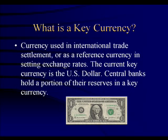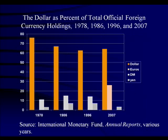The United States dollar is a key currency. A key currency is used in international trade and settlement, or as a reference currency in setting exchange rates. The current key currency is the US dollar. Central banks tend to hold this currency in their reserves in case of emergencies. As you can see, in 1978 it was almost 80% of foreign currency holdings. It has declined somewhat over the past two decades, and in 2007 it actually went up a little.